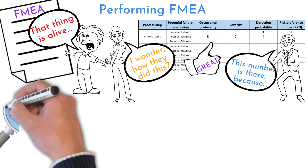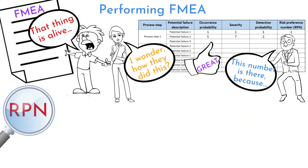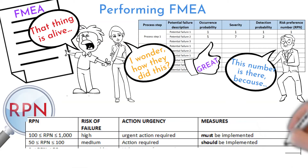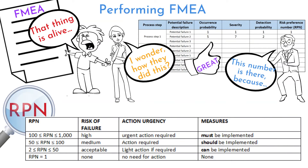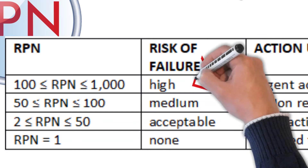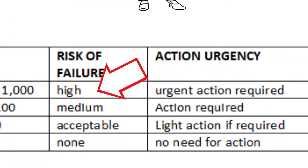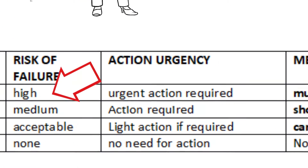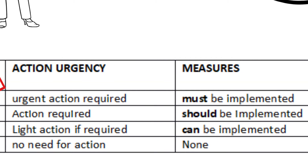Now it is time to address and reduce the biggest risks based on the final RPN. Use this decision table for action and measures determination. Start addressing potential failures with high risks first, then medium risks. Briefly review acceptable ones as well, just to be sure you are not missing any potential troublemakers.